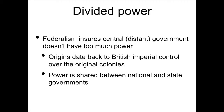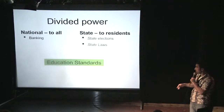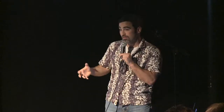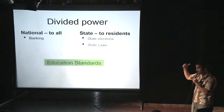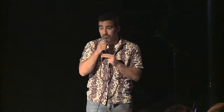Divided power is a system called federalism, and this ensures a central or distant government doesn't have too much power. The origins date back to the British imperial control over the original colonies. At divided power, you have the national, which controls all laws for all people such as banking, and then state laws, which are applied only to state residents such as state elections. Then you have areas like education which overlap — you have national standards which state laws have to comply with. As the constitution is written, it suggests the central government only has a small role, but today we have a really large federal government due to increasing multi-state problems in commerce, which requires a larger government.